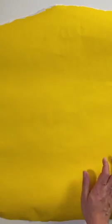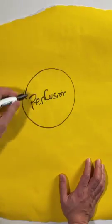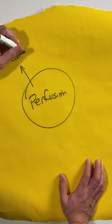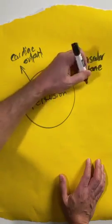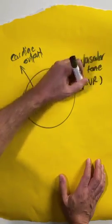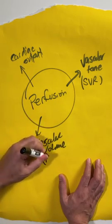Shock is a state where there's circulatory dysfunction and decreased tissue perfusion. Perfusion itself is caused by one of three things: cardiac output, vascular tone, typically called systemic vascular resistance, or intravascular volume or the preload to the heart.